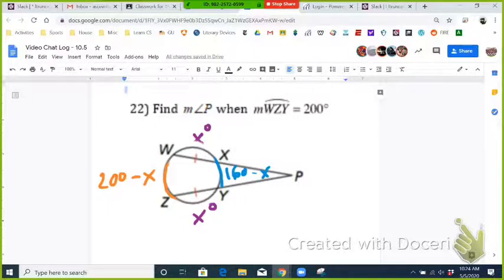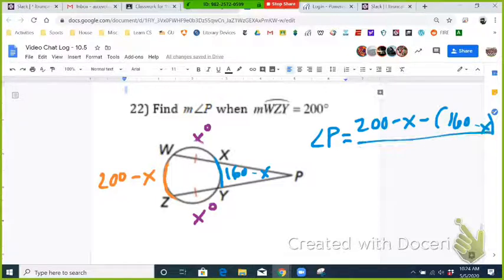So now we could take angle P, and we can express it as 200 minus X minus 160 minus X, divided by 2.